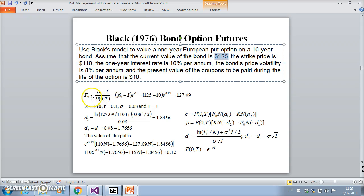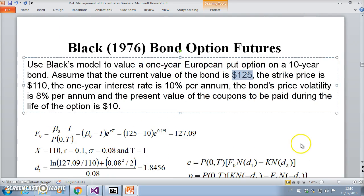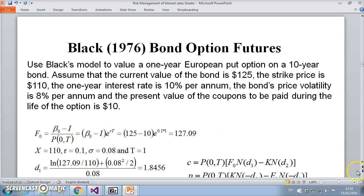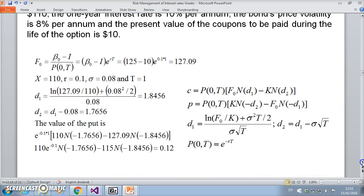In order to implement the Black model we need a reference value for F, the futures price. To make that happen, we set the futures price equal to the current spot bond price minus the present value of the coupons, and we compound that using e^(rt), so we're using the exponential rate of 10% continuously compounded. The future contract is taken to last one year, so that gives us a futures price of 127.09.